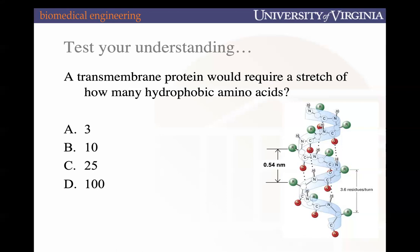With beta sheets, side groups point up, down, up, down alternately; but for alpha helices all side chains point outward. Because of that, any protein that has a transmembrane part — that part will be an alpha helix. That is the key takeaway.